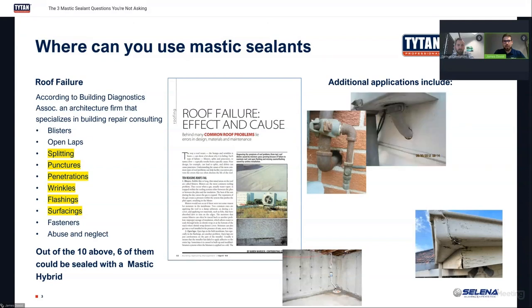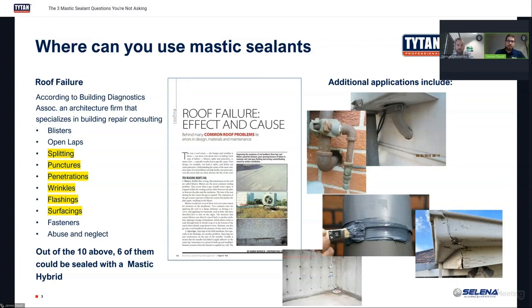Another really good area is any kind of conduit or wire penetrations in or around the building — those penetrations would be well suited for mastic sealant as well. You can also use it to seal PVC pipes on the outside, as an addition to PVC glue, to seal up the exterior so there's definitely no weathering happening.